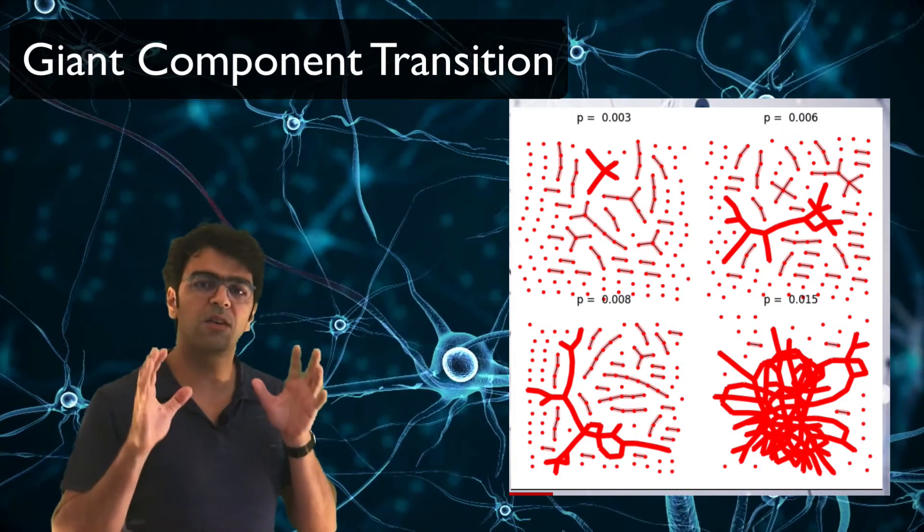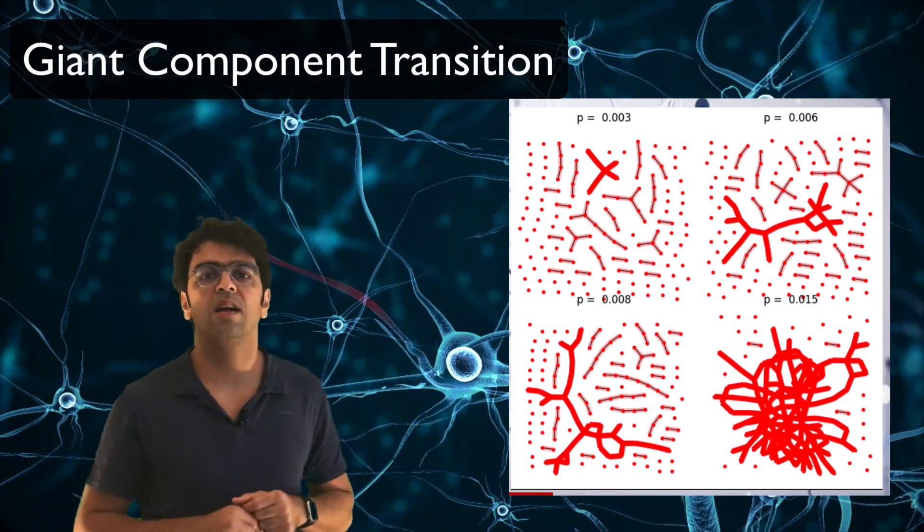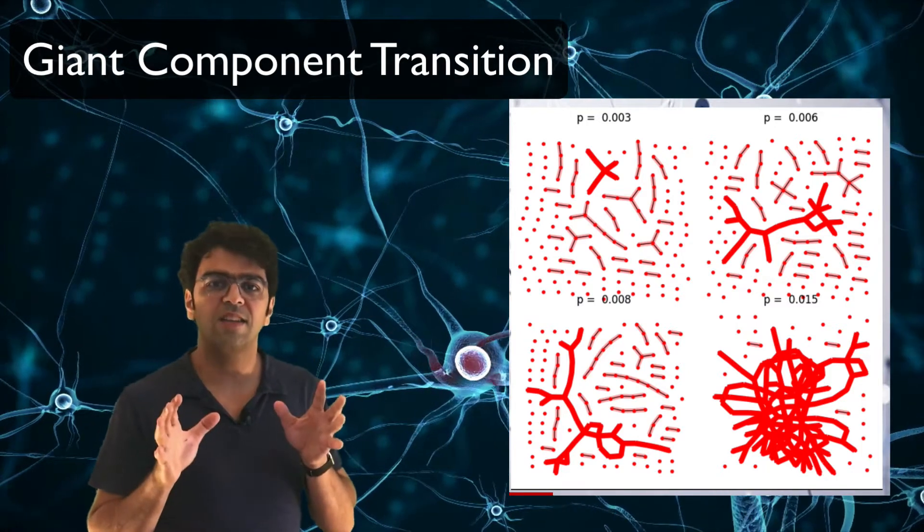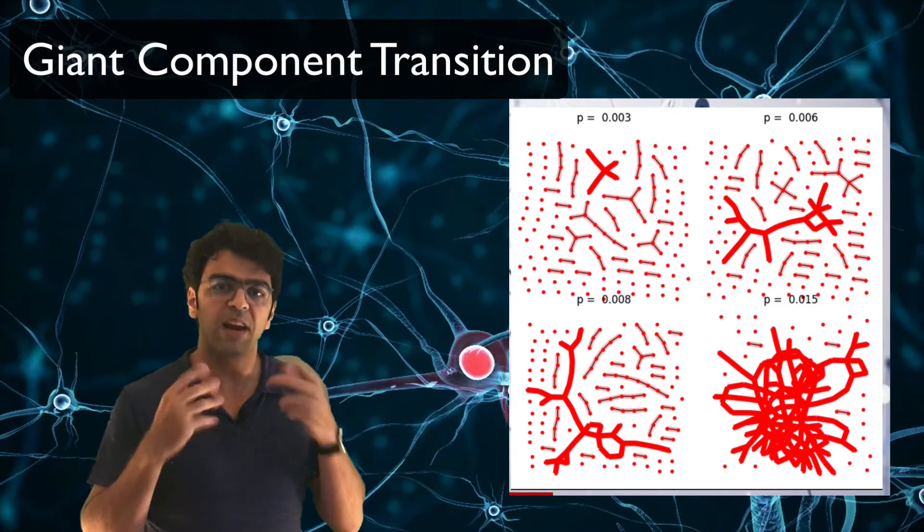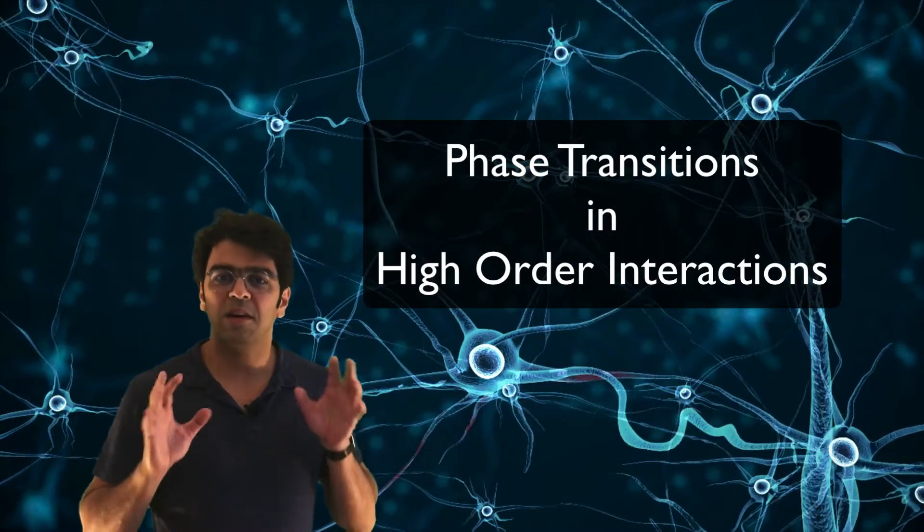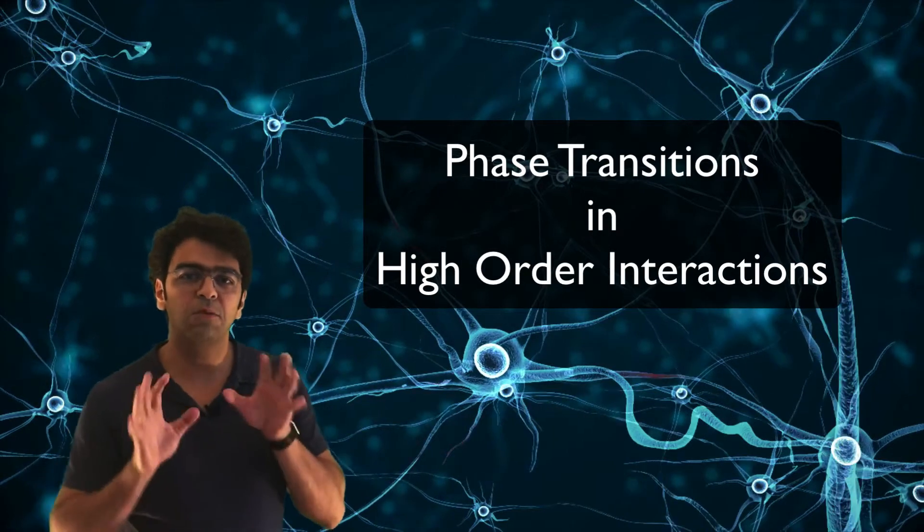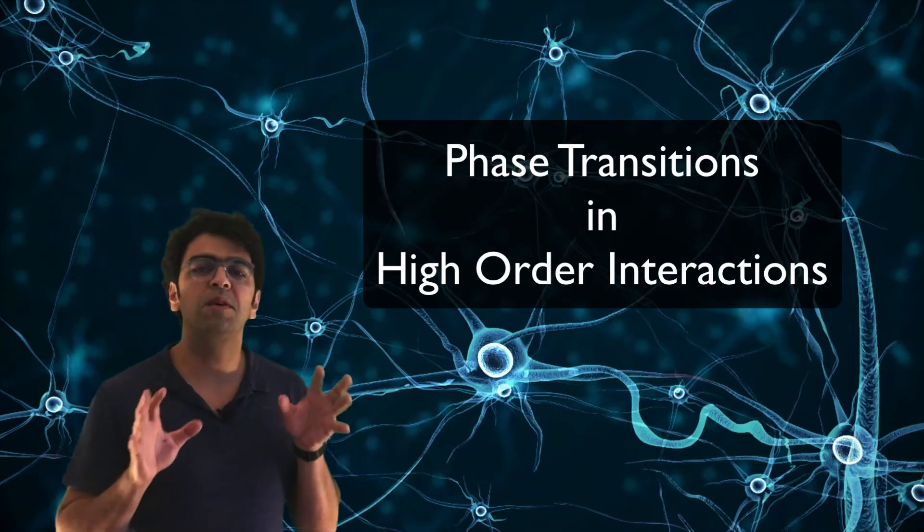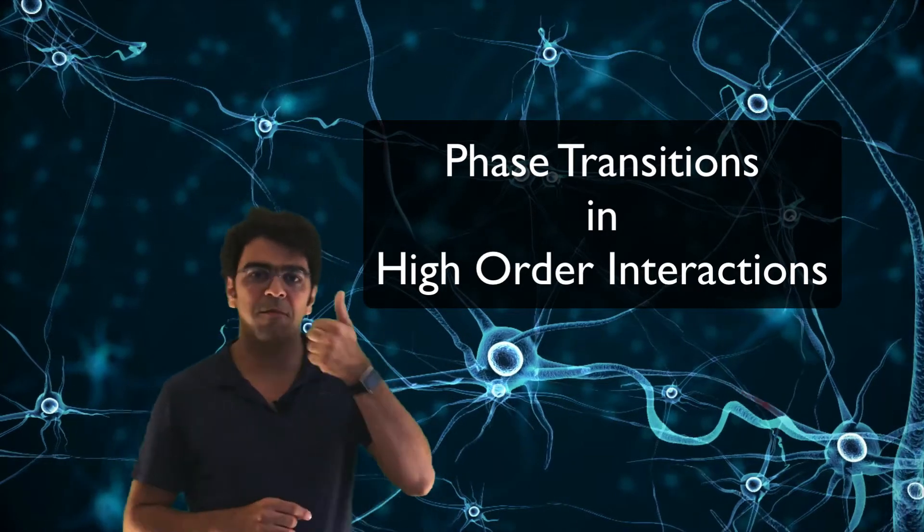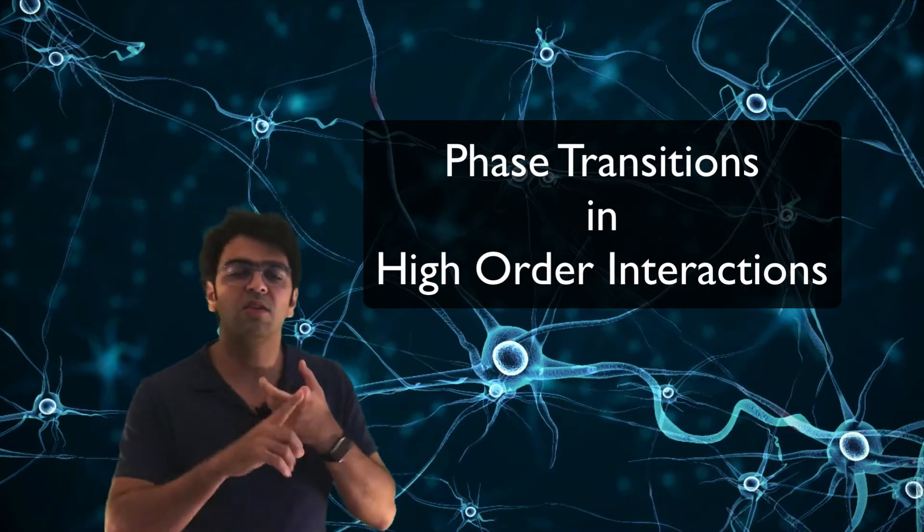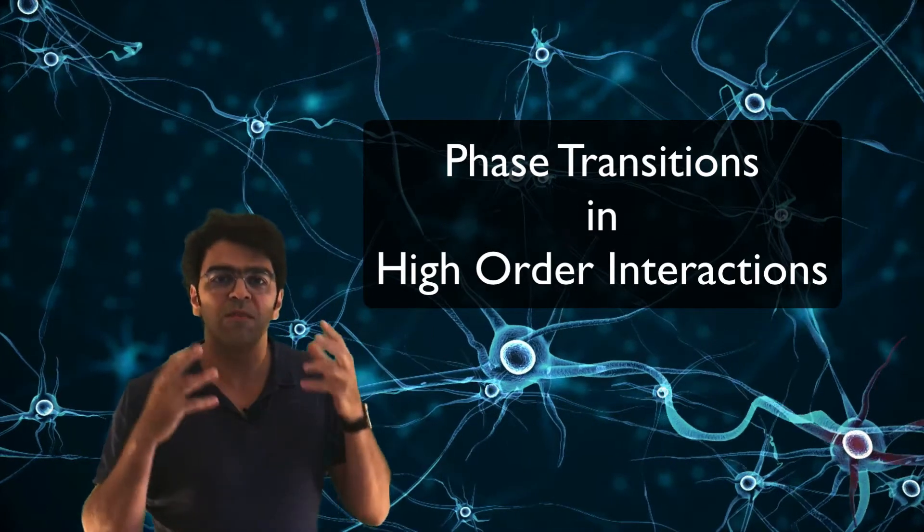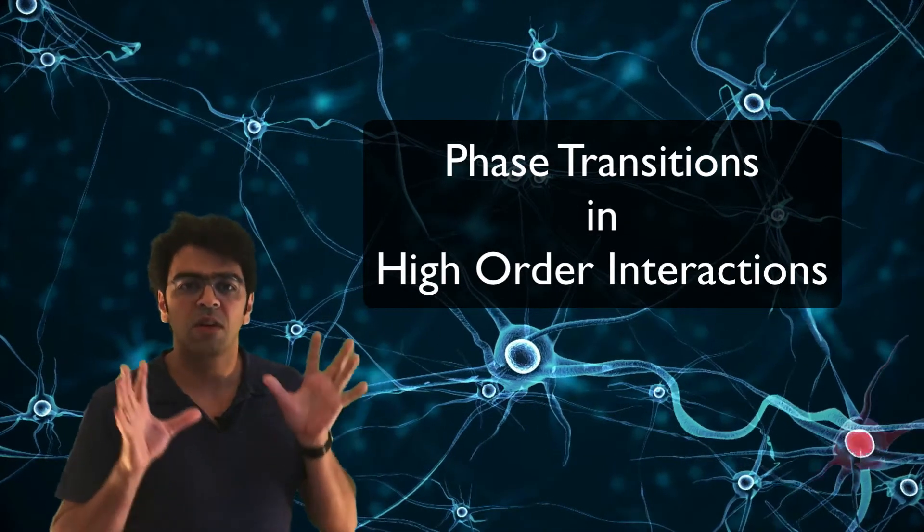That means that after this critical probability p, any other new edge that I attach to the graph will very likely be a cycle. On the other hand, and actually that's why we are here in this conference, networks are actually beyond pairwise interactions. That means that instead of only having edges, we have triangles, we have tetrahedra, we have all kinds of simplices that also encompass the information of a network.